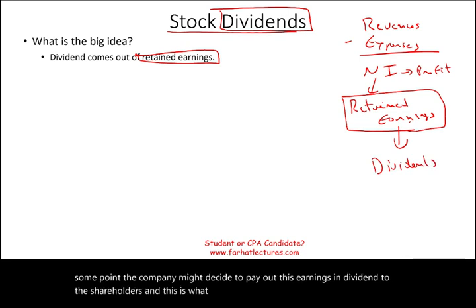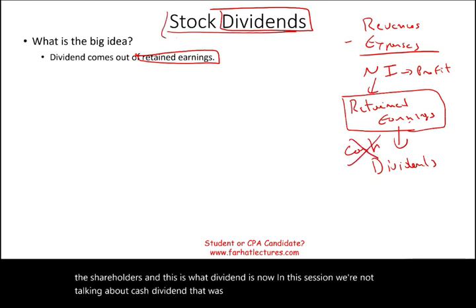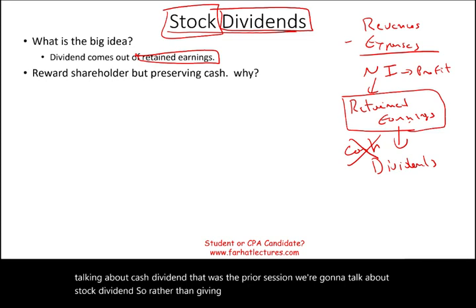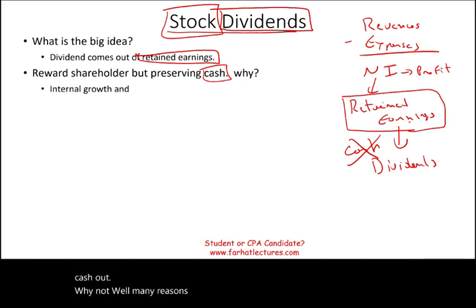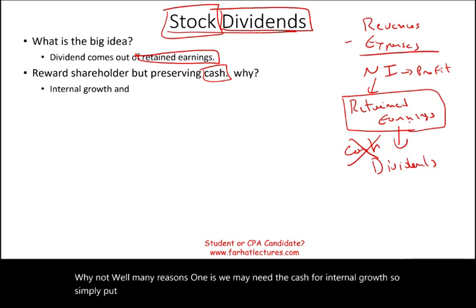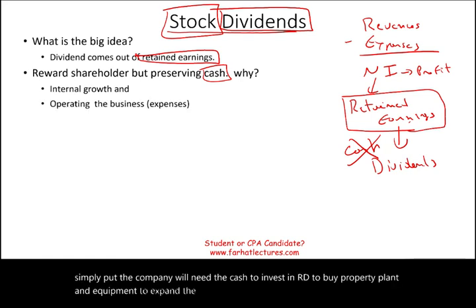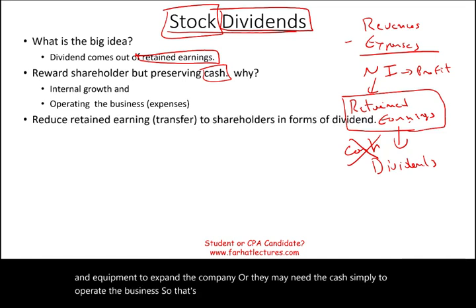In this session, we're not talking about cash dividends — that was the prior session. We're going to talk about stock dividends. Rather than giving you cash, we're going to reward the shareholders but preserve the cash. Why not give the cash out? Many reasons. One is we may need the cash for internal growth — to invest in R&D, to buy property, plant and equipment, to expand the company, or simply to operate the business. So that's why we don't pay out the cash.